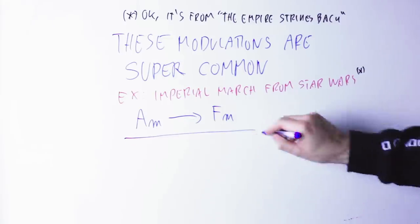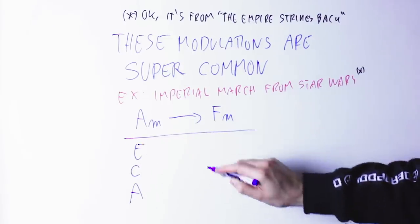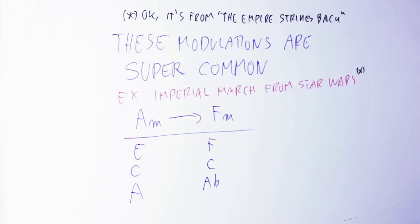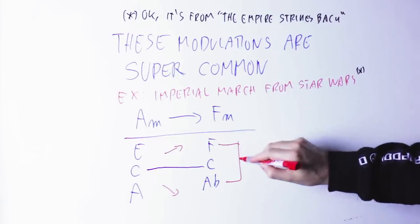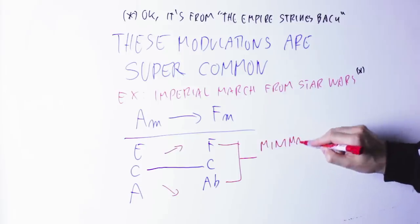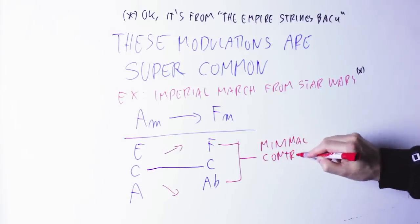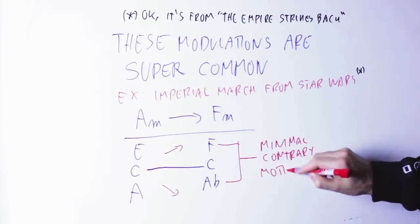Here the notes in A minor are A, C, E, and the notes in F minor are F, A flat, C. Now the common tone is the C note and the other two notes do exactly the same as before. So one note, the E note, goes up a half step to F and the other note goes down a half step to A flat.